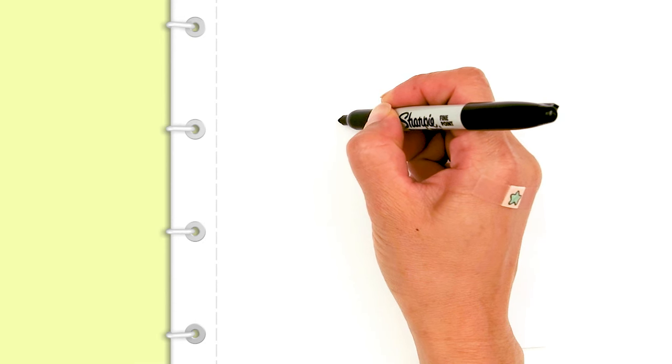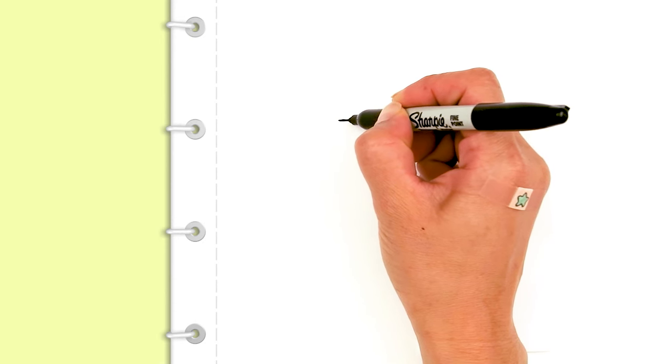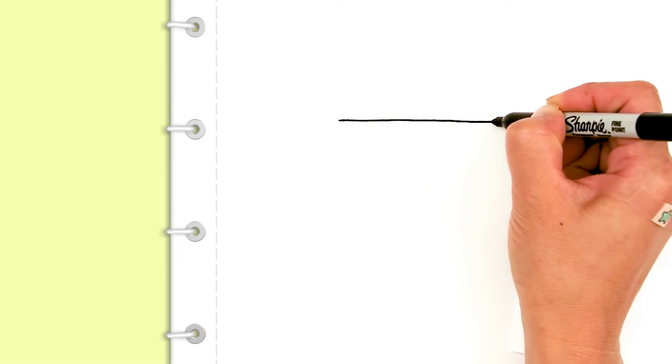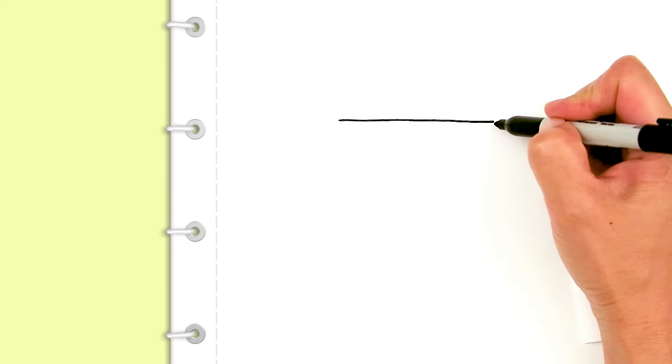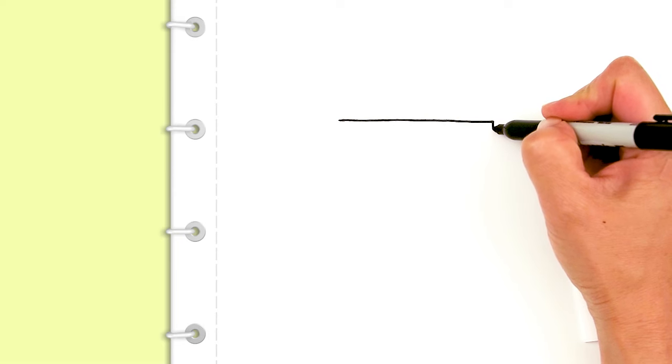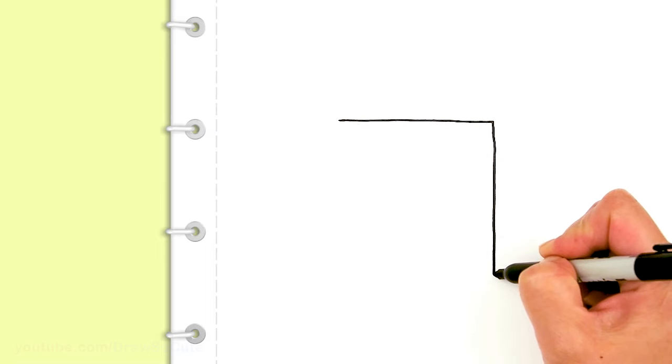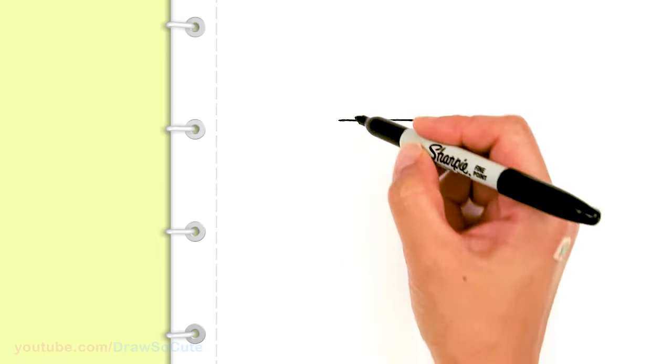So whatever size you want your book to be, that's how big you're going to draw your rectangle. I'm just going to go right across about that much. I'm going to bring it down. Try my best to draw a straight line.